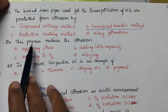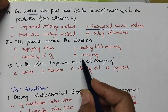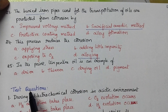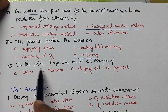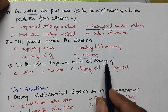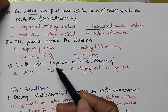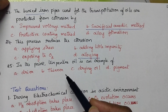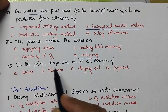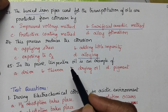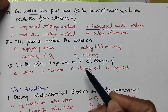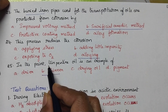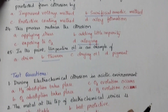The process that reduces corrosion is alloying. In paint, turpentine oil is an example of a thinner — whenever paint becomes thick, turpentine oil is added to reduce its viscosity, so turpentine oil acts as the thinner.